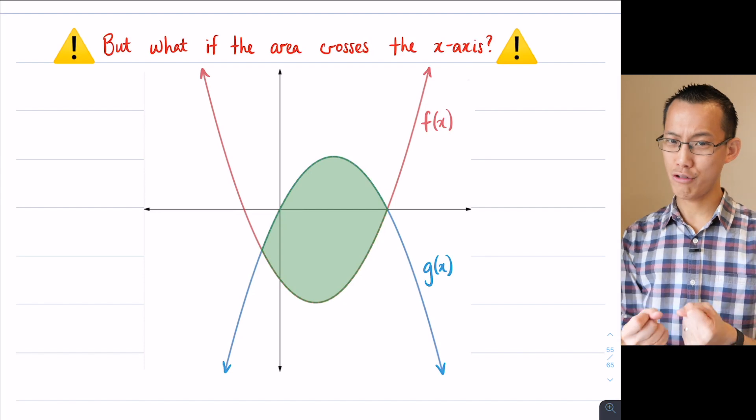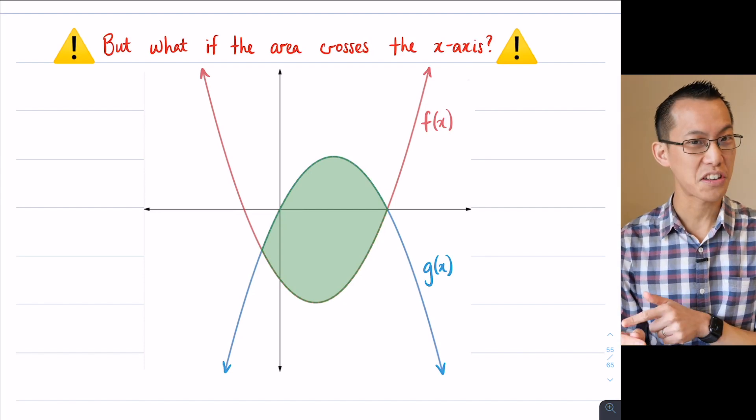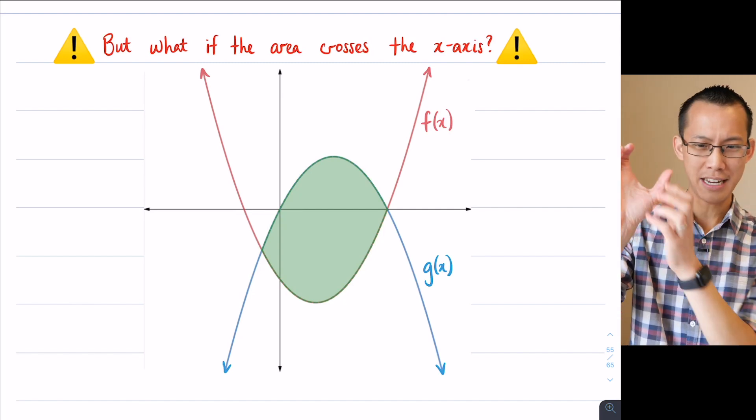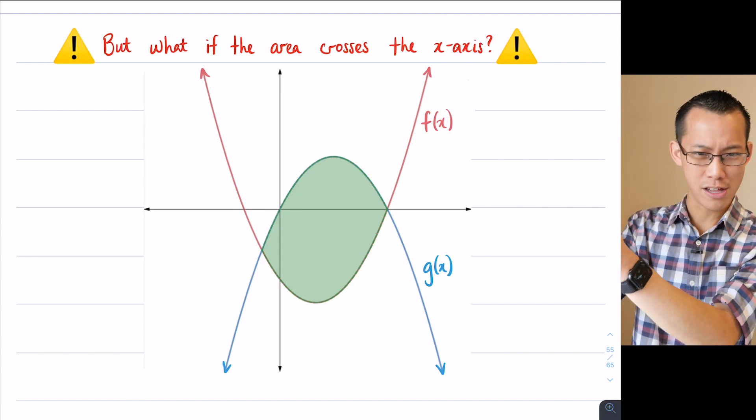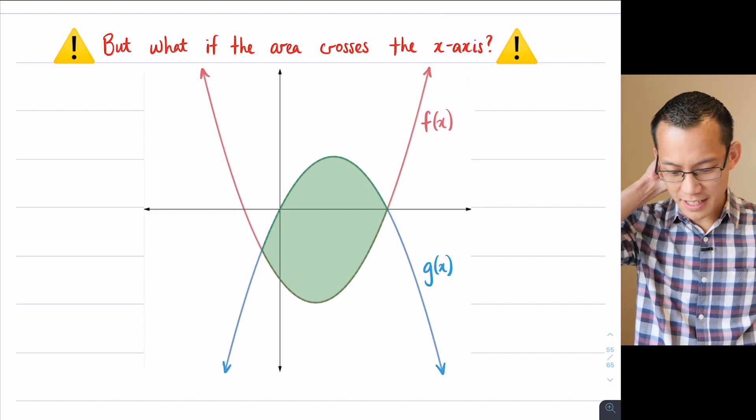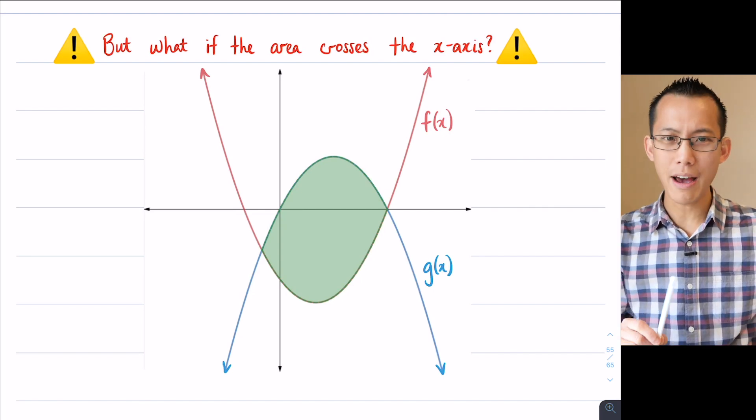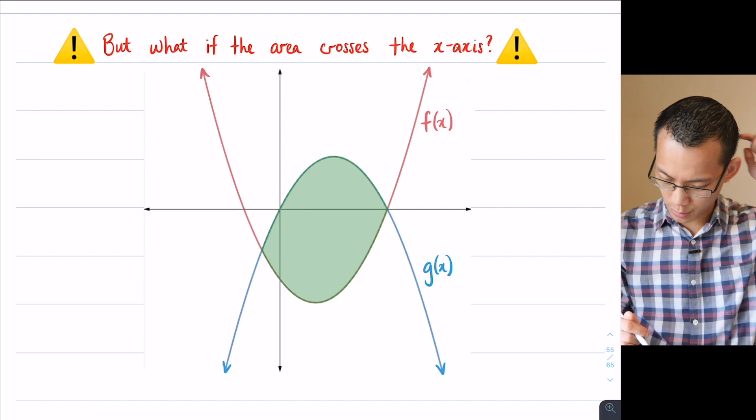Now you can see I put all these warning signs here, right? Because we spent like a good amount of time warning you that when you integrate, you get areas that are negative or you get values that are negative if the area is beneath the axis. So what we've been trying to do is train you to be super cautious when you're like, oh, there's an area beneath the axis. I should treat it differently.